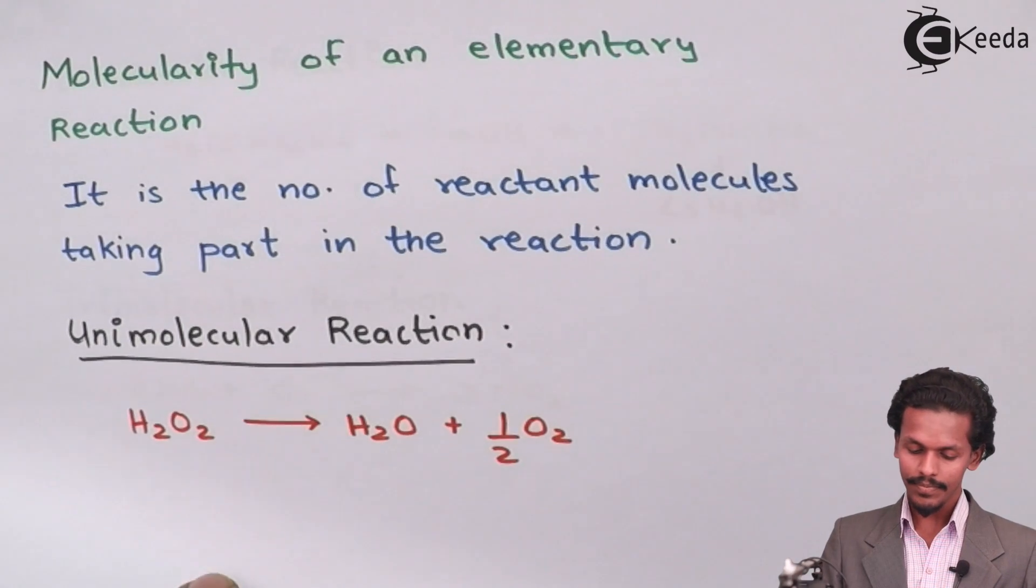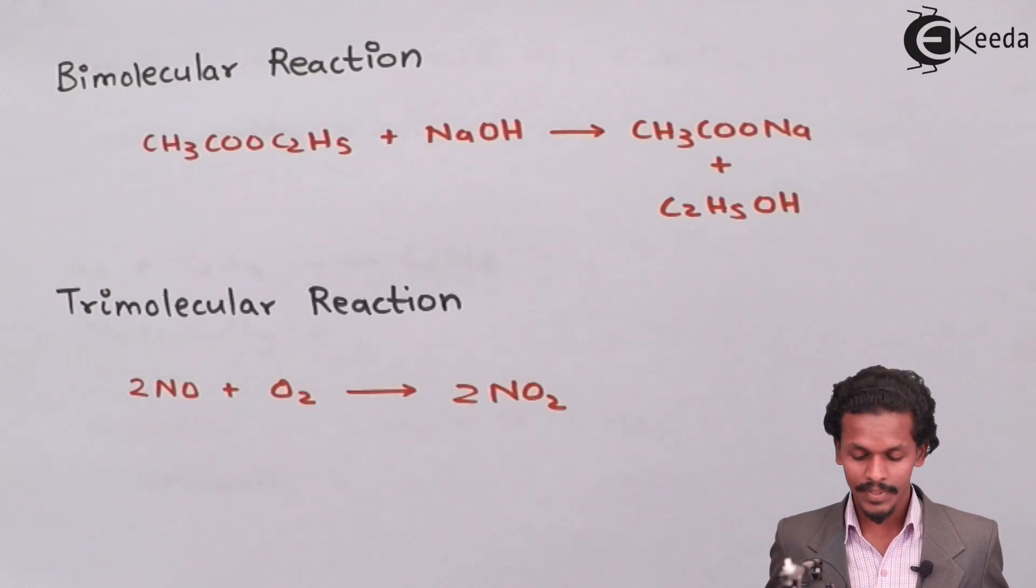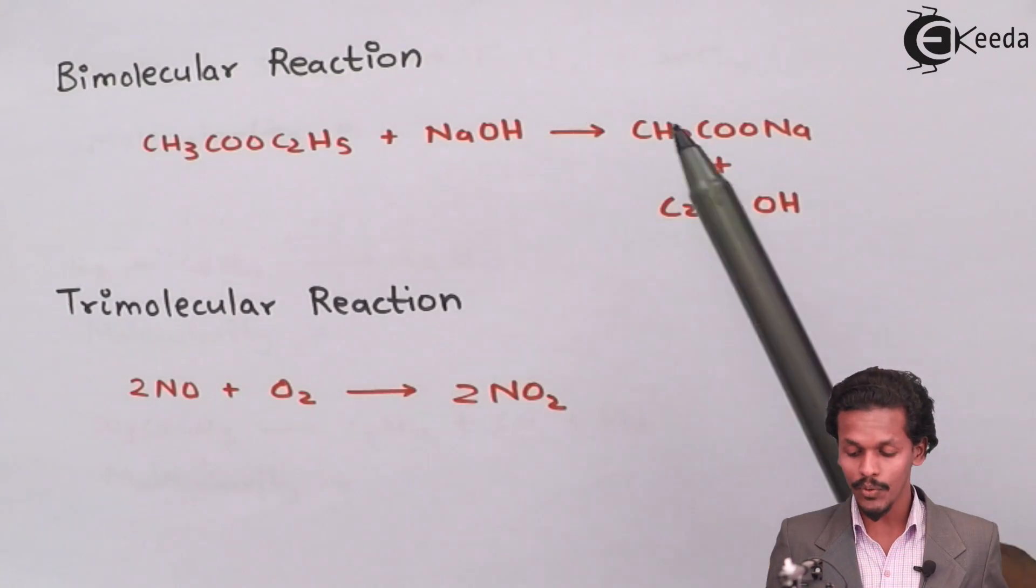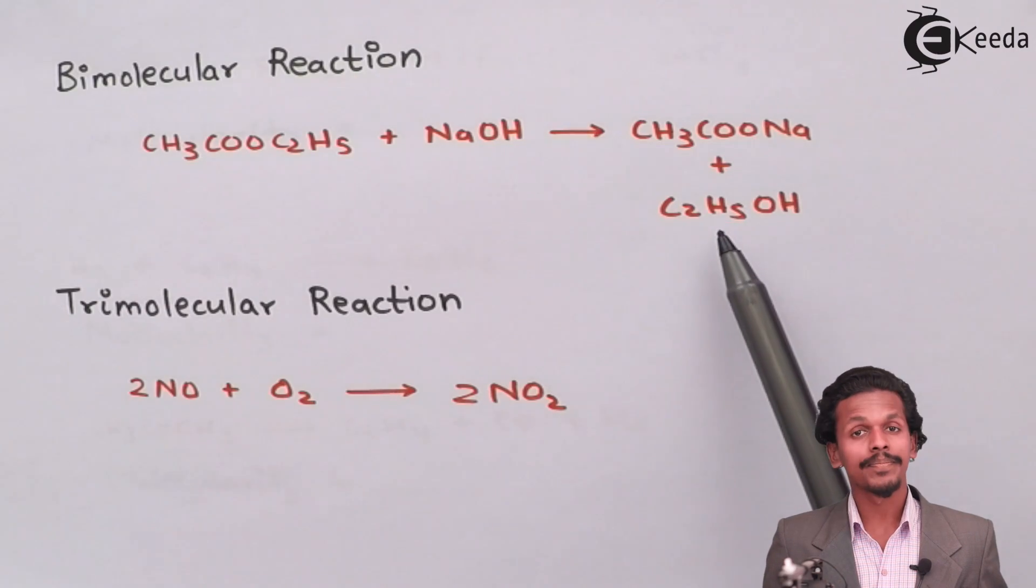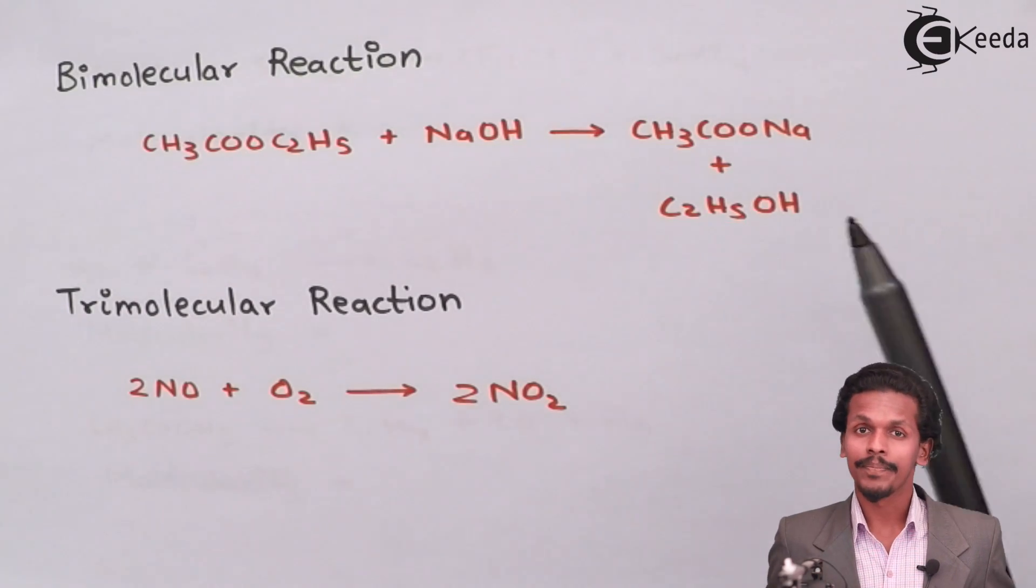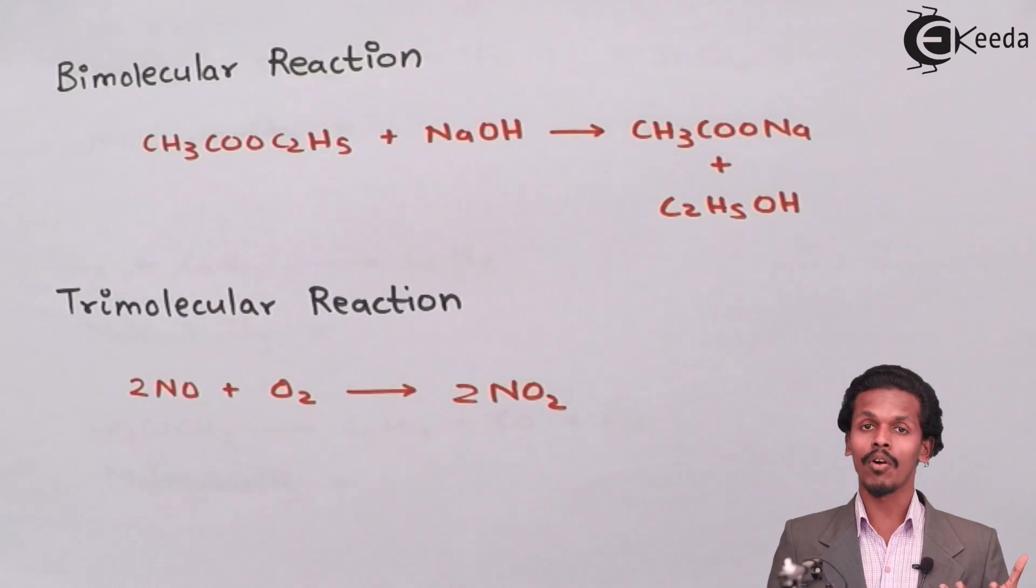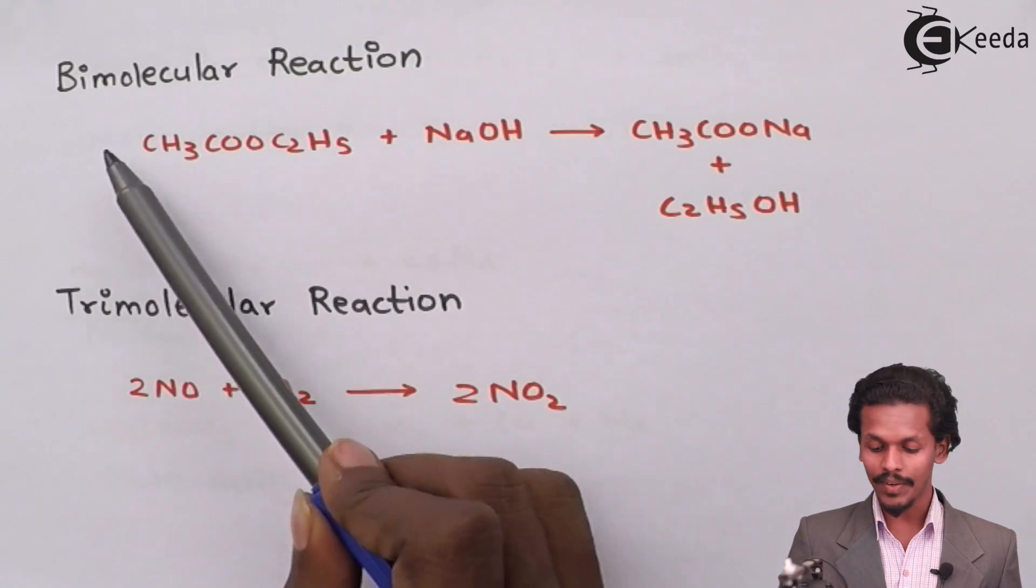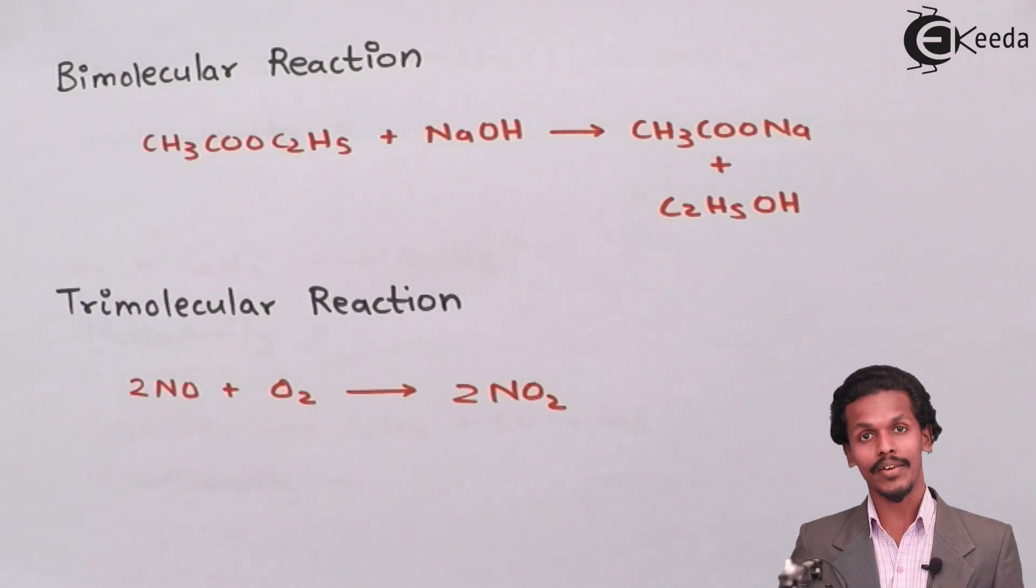So moving towards the next one that is the other type that is for a biomolecular reaction. As you can see, ethyl acetate plus sodium hydroxide will give you sodium acetate plus ethanol. So in this case, the total number of reactants involved are two with having the number of moles as one and one, which makes an overall molecularity as two. So that's why it is a biomolecular reaction.